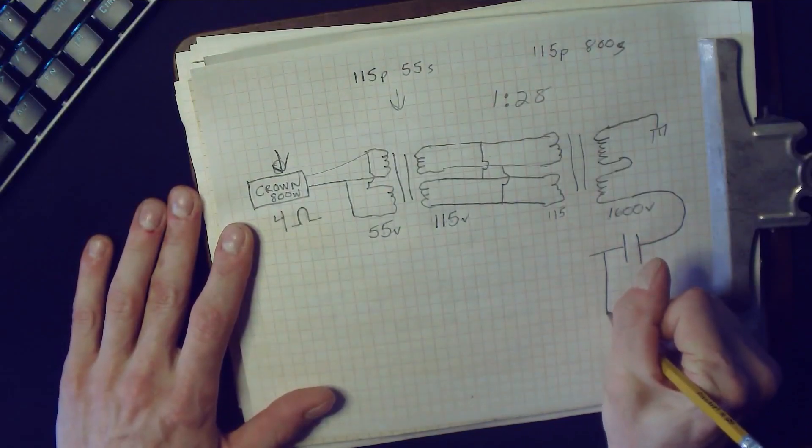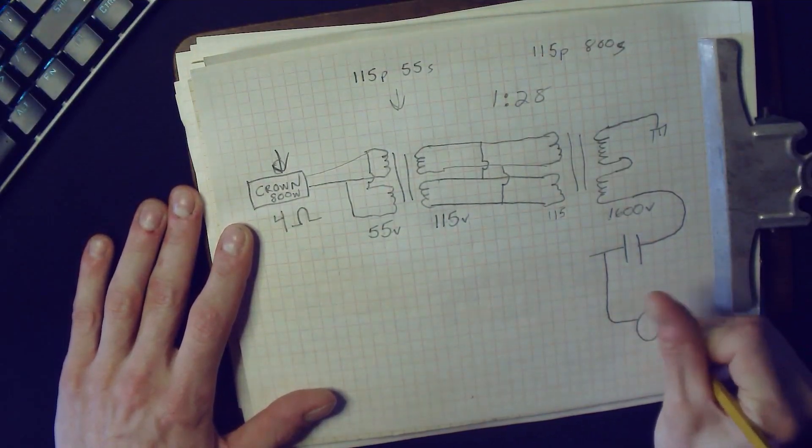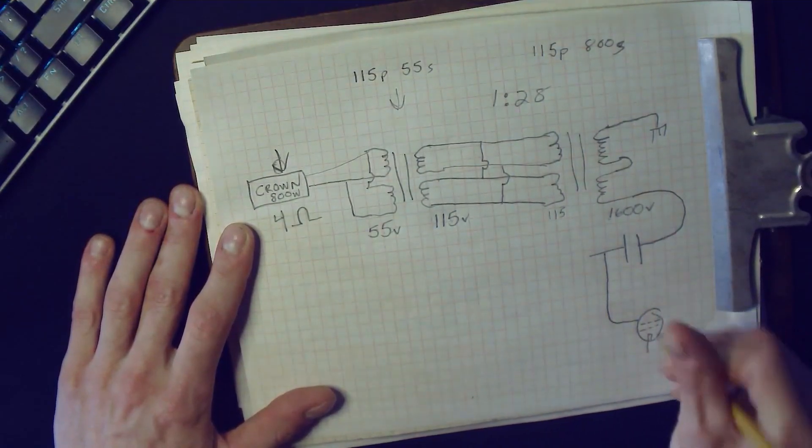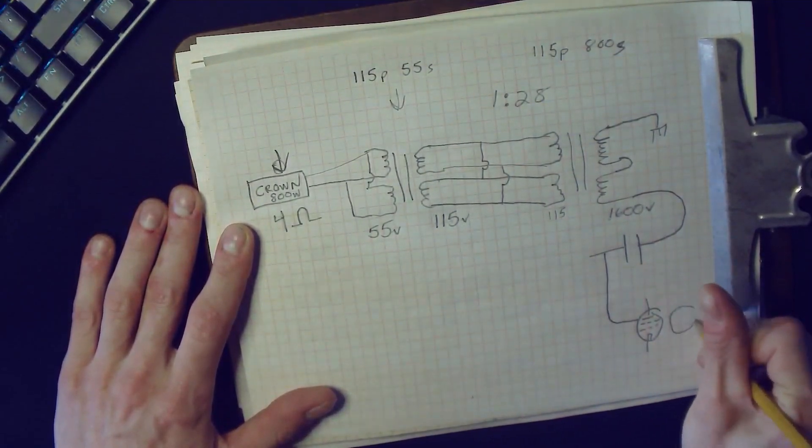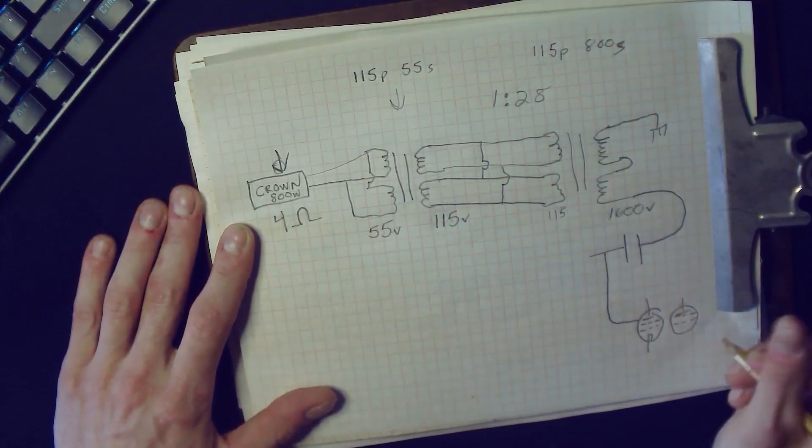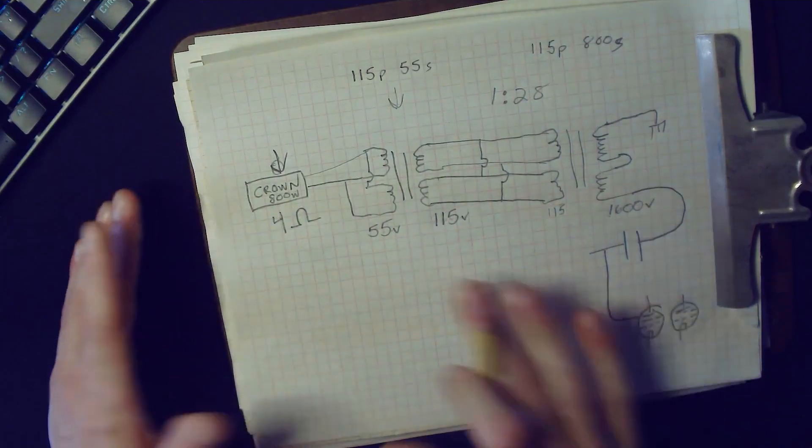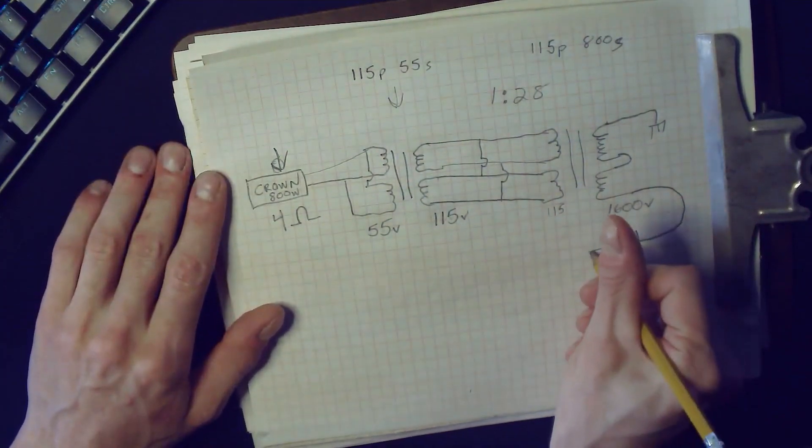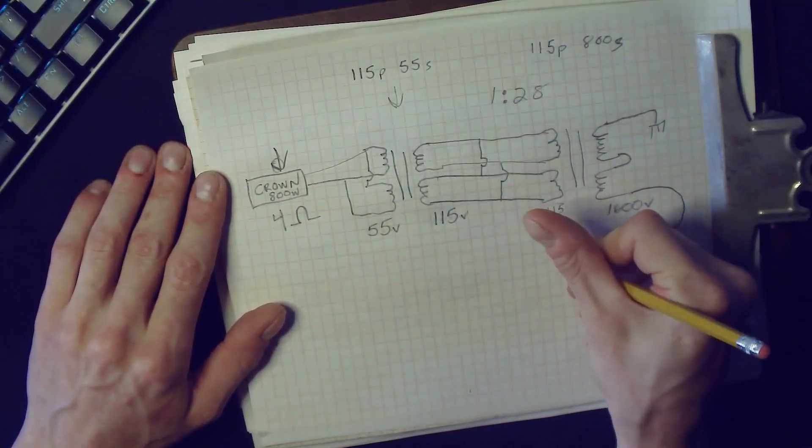Basically, we're going to feed the finals from this. Now here's our two 6146s—plate and screen. There you go, we're feeding them, but we don't have any high voltage yet.